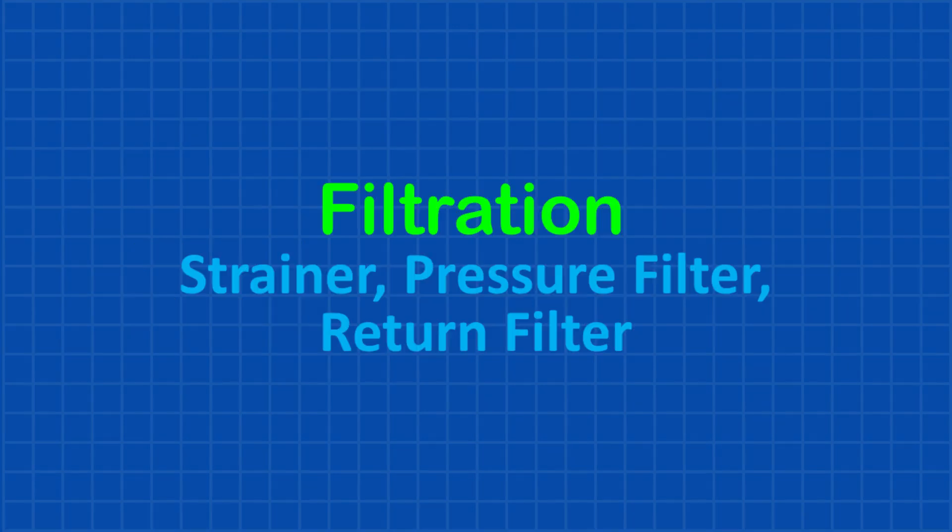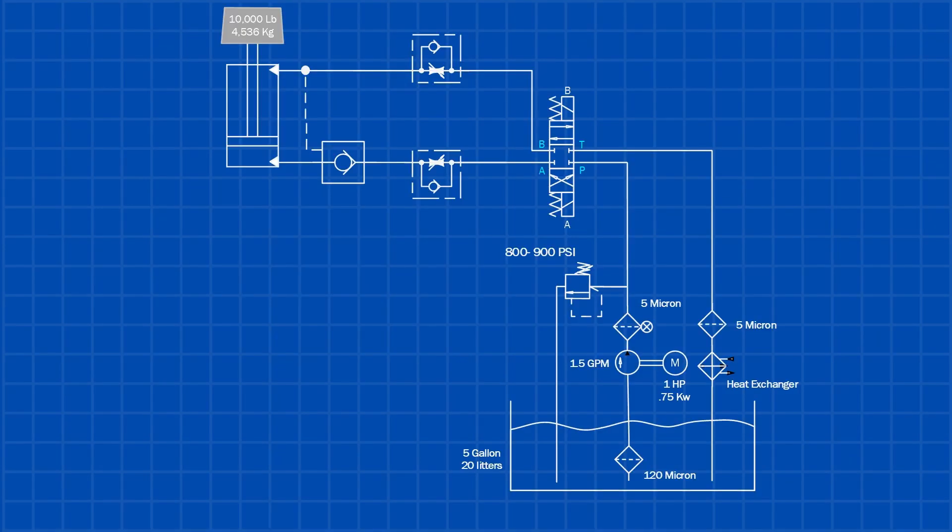Next, let's go over filtration in our hydraulic system design. First, we have the suction strainer, which typically has a 120-micron mesh. It's designed with larger openings to prevent clogging because if it gets blocked, the pump can cavitate, which may lead to serious damage.